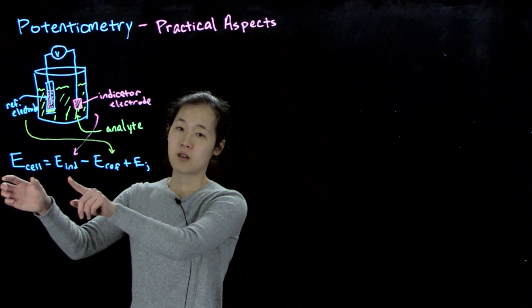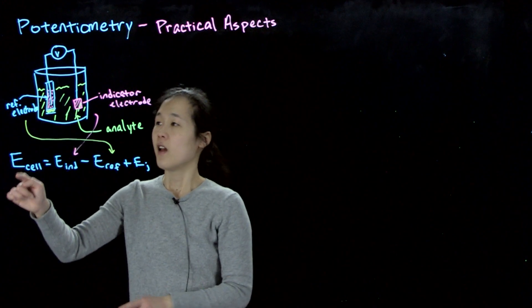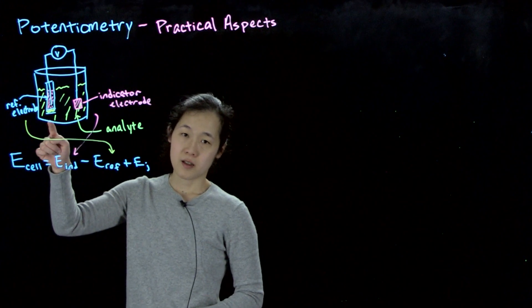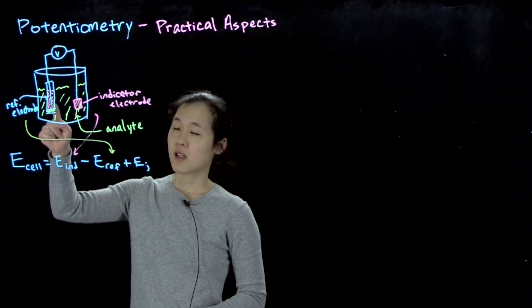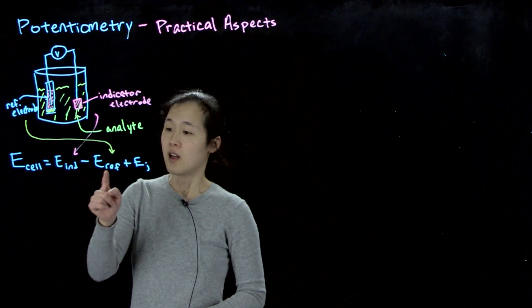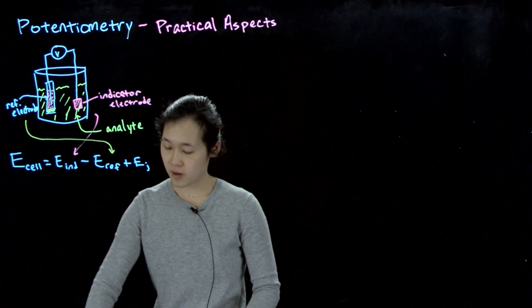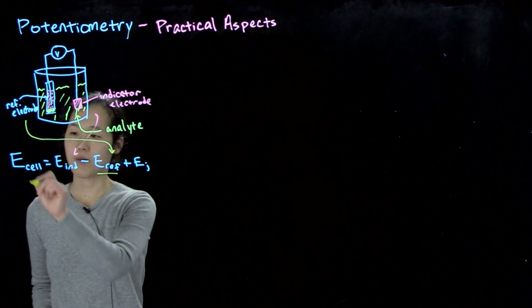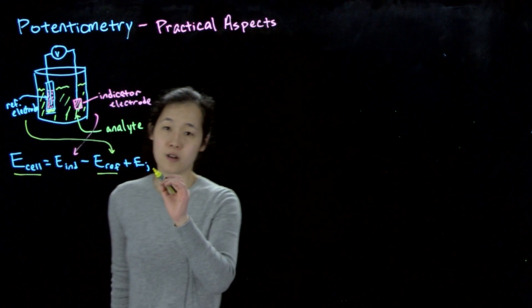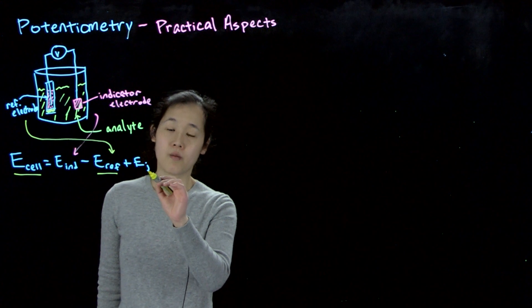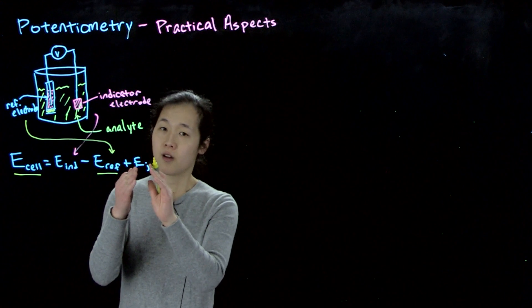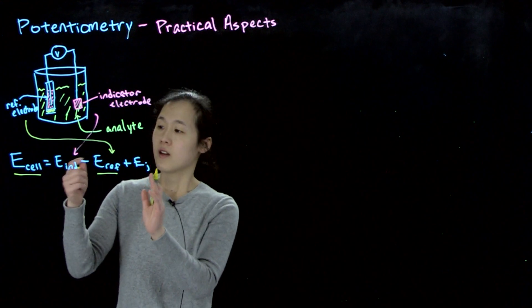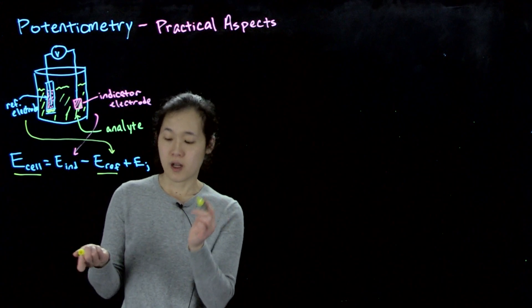We can measure the cell potential. This comes from the voltmeter. And then we also know the reference electrode potential that's given. So if we know this reference electrode, we can measure E cell, and we can either ignore the junction potential or minimize it. And then from this we can then calculate the indicator potential and then get out the concentration we want.